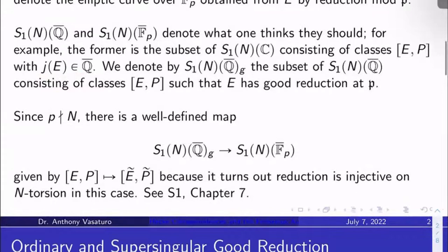Let's denote by S₁(N)(Q̄)_G, G will stand for good here. The subset of S₁(N)(Q̄) consisting of classes of enhanced elliptic curves [E, P] such that E has good reduction at ℘.